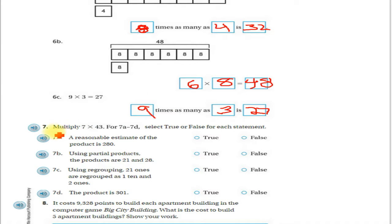Alright, now I'm ready for number 7. It says multiply 7 times 43. For 7a through 7d, select true or false for each statement. So I'm going to first do what the problem says: multiply 43 times 7.